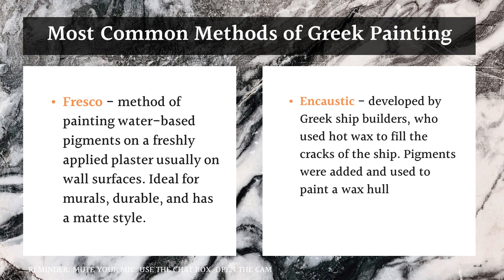Once the cement-like plaster dries, the painting is permanently embedded in it. This is why most of these paintings — including Egyptian paintings, which also used fresco — have been preserved to this day.